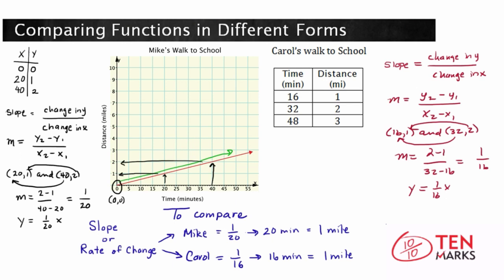And if we had a graph of Carroll's walk, we would see that Carroll's line would be steeper. It would have a steeper slope. Now you know a bit more about comparing functions in different forms. See you next time!